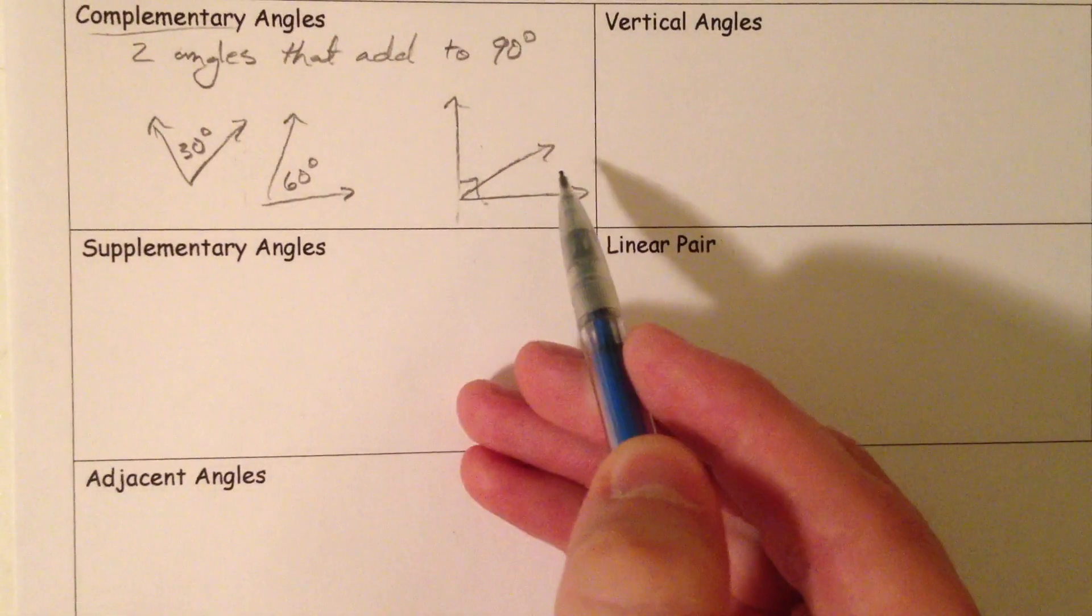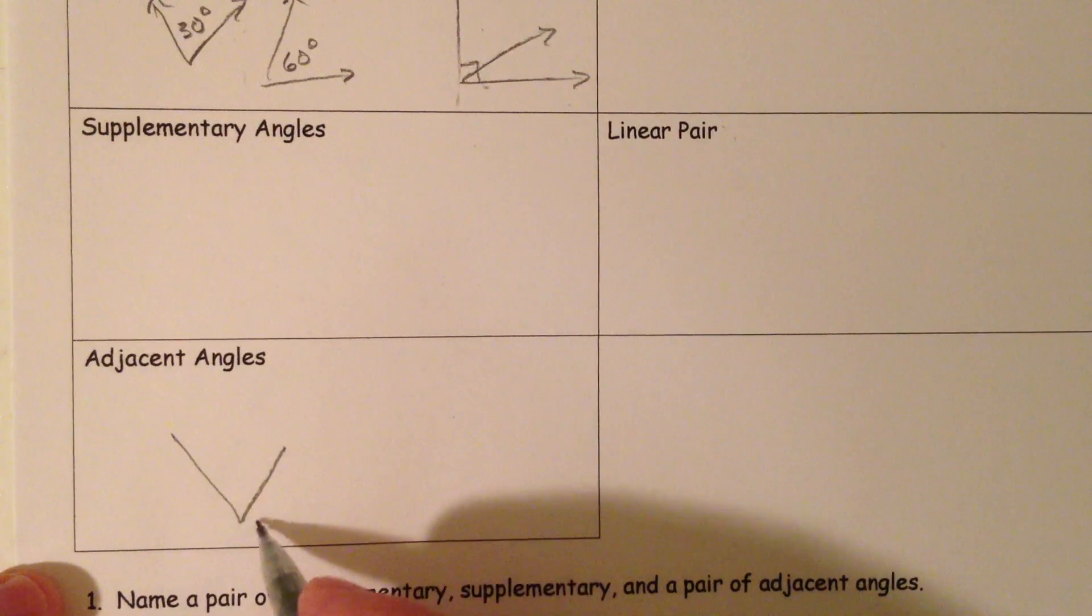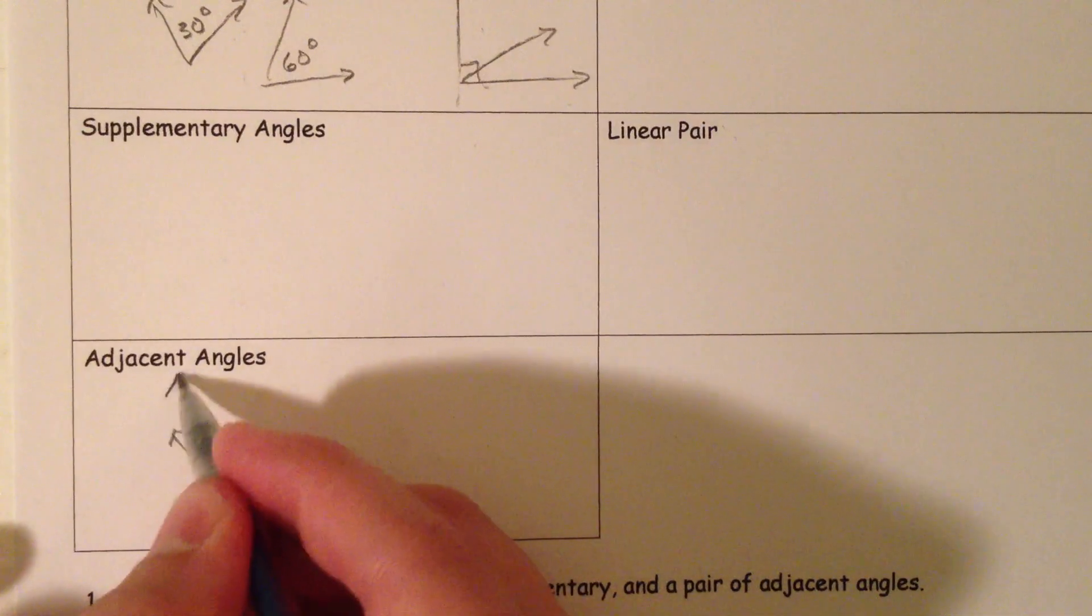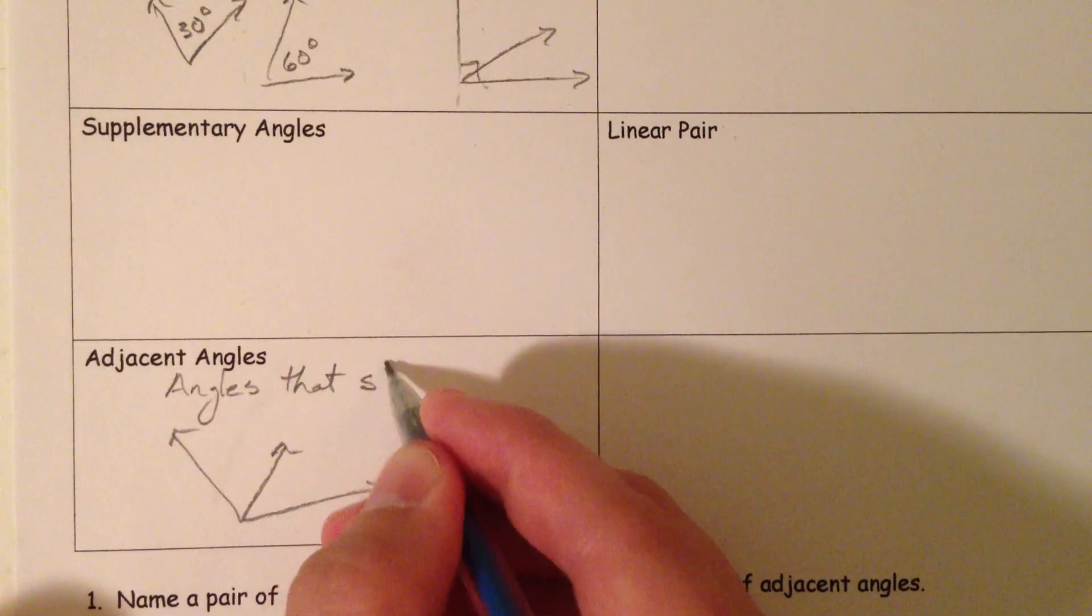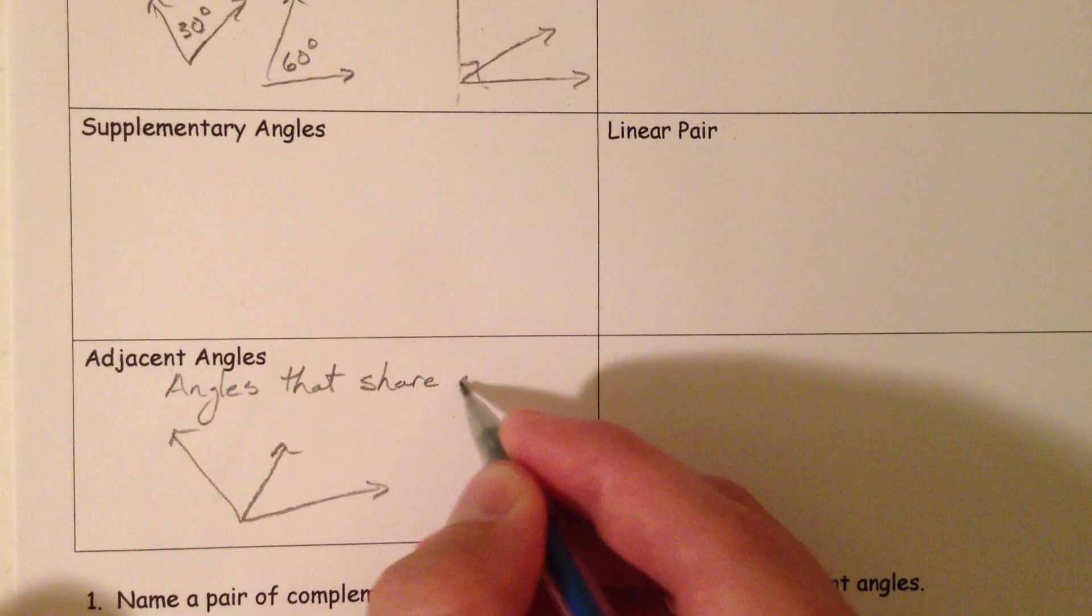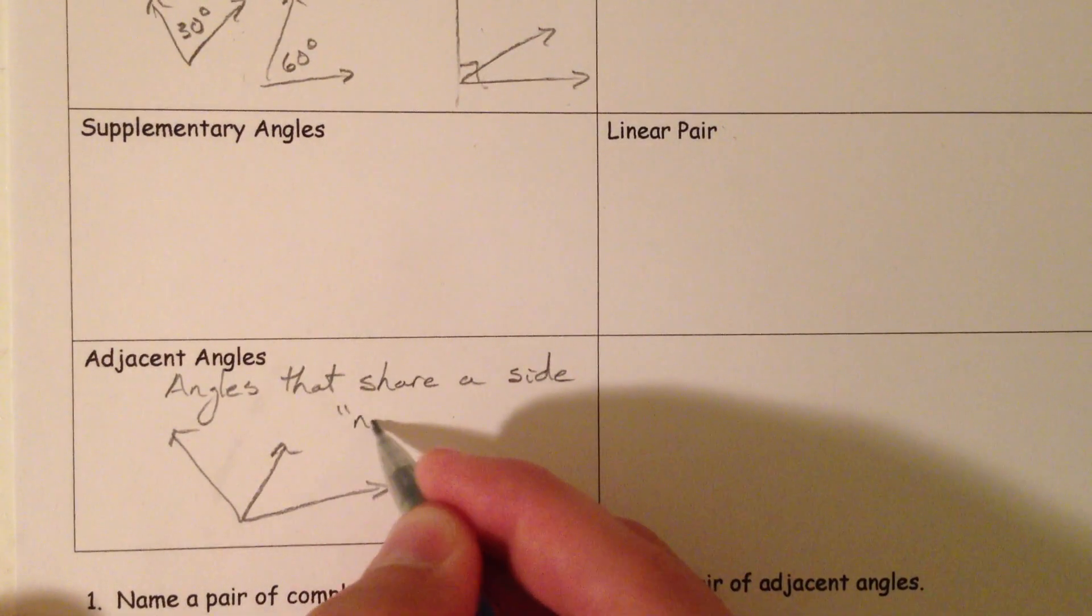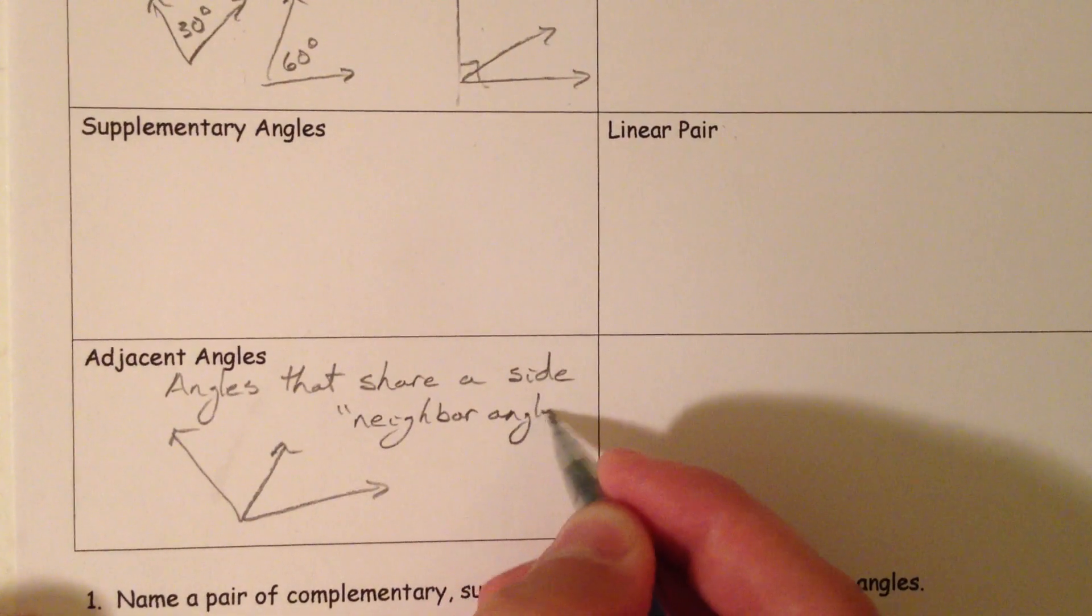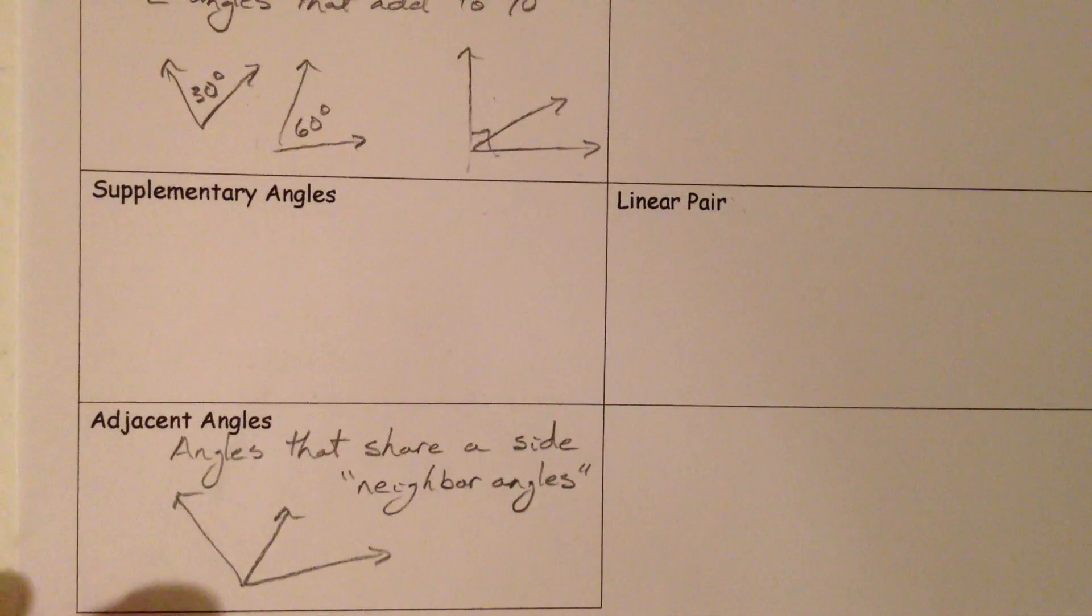When you have two angles that look like this, since I just drew it, those are called adjacent angles. Angles that share one of the sides. Angles that share a side. Basically, think of them as neighbor angles. Why I say neighbor angles is because when you say adjacent, the person sitting next to you is adjacent to you. The neighbor that has a yard adjacent to yours is next to you.